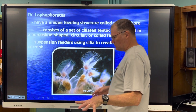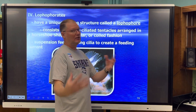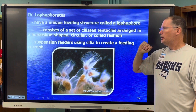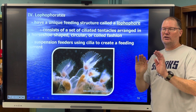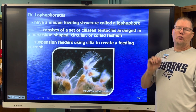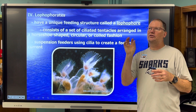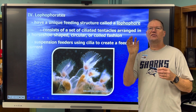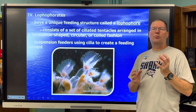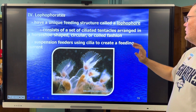Now we're moving on to a different phylum — moving on from worms to something that's kind of in between a worm and a mollusk. These are called lophophores, or the lophophorates. They have a unique feeding structure called a lophophore — ciliated tentacles arranged in a horseshoe shape, circular or coiled. They are what's called suspension feeders. They wave something in the water and catch suspended particles, like marine snow, zooplankton, or phytoplankton — anything small enough to pull into their mouth with their ciliated tentacles.